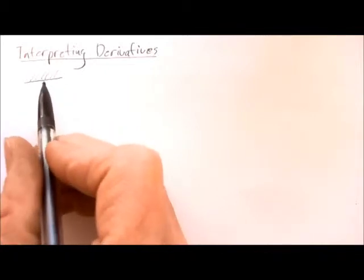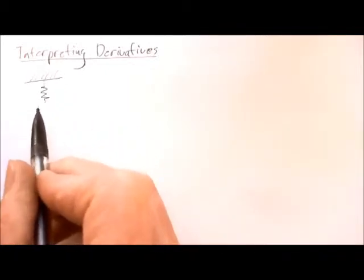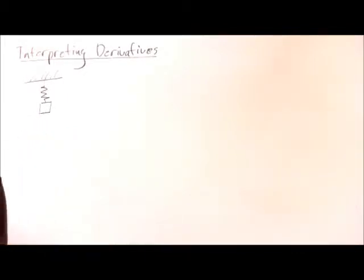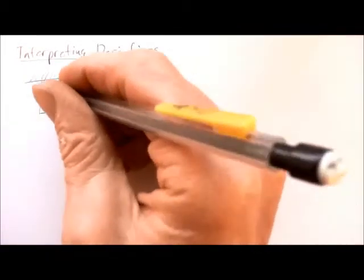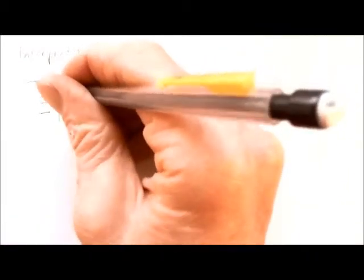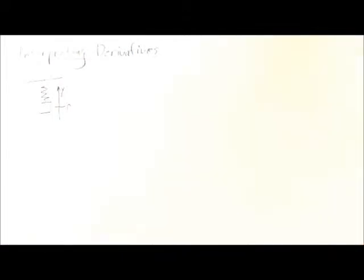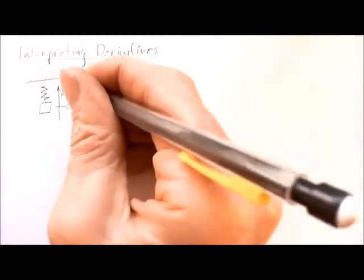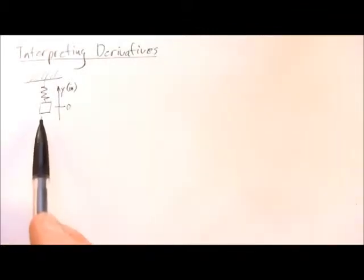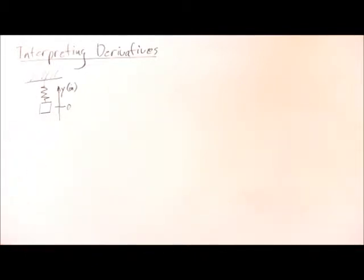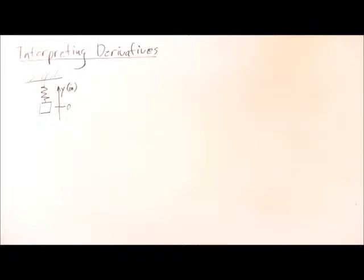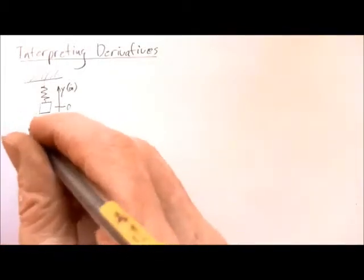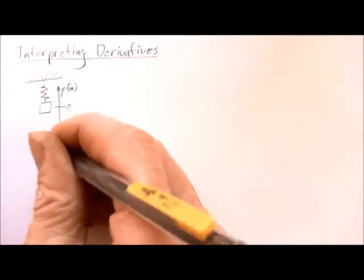Let's consider again a spring hanging from the ceiling with a mass attached to that spring. We'll let the mass hang at equilibrium, so it's just hanging there, it's not moving. At the center of the mass, we'll call that position 0, with positive being up and negative being down. We'll let that variable be y, and let's measure our y in inches. We can lift this weight up or pull it down and let it go — the weight's going to oscillate up and down. The height at any time is going to depend on the time itself, so time is in seconds. We indicate that y is a function of time.